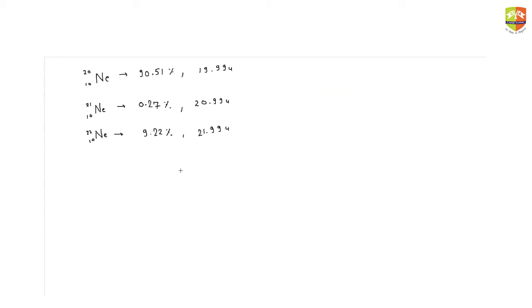So is it 20.189? Others say 20.17. So this is how you do it: 19.99 multiplied by, rather than using percentage you can multiply it with fraction, 0.901 plus 20.99 multiplied by 0.0027 plus 21.99 multiplied by 0.0922. So you will get around 20.17 units.